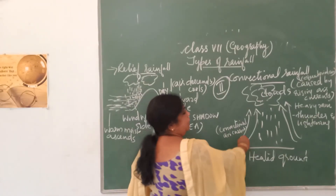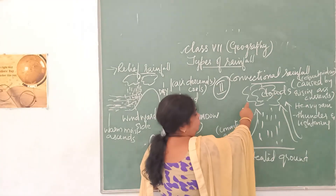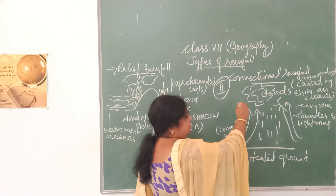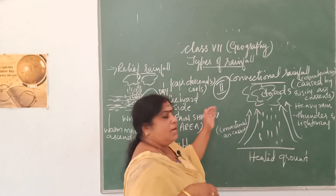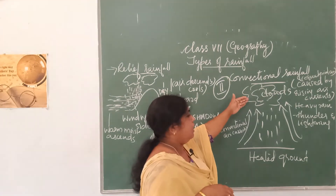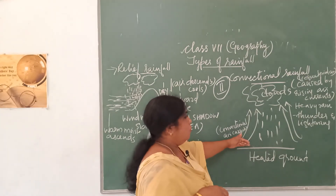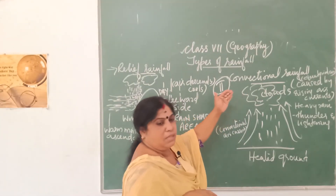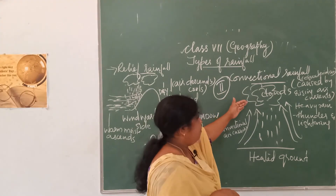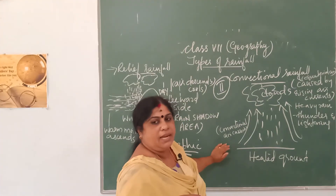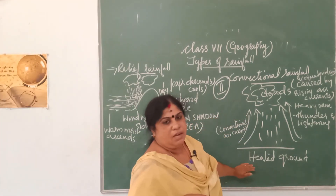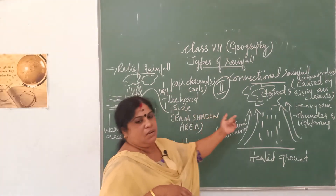The air in these equatorial regions becomes heated, becomes lighter, expands, and rises up higher into the atmosphere. At a particular layer of the atmosphere, the air condenses as it becomes cold — the temperature goes on decreasing and the air becomes cooler and cooler, absorbs moisture, becomes heavier, and begins to descend downwards in the form of rainfall. This rainfall is accompanied by thunder and lightning. As a result of the movement and creation of convection air currents, this is called convectional rainfall.